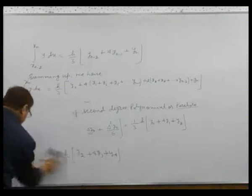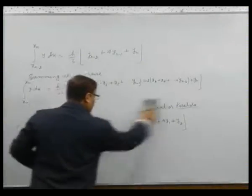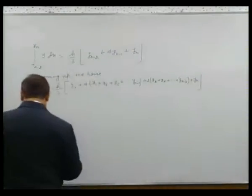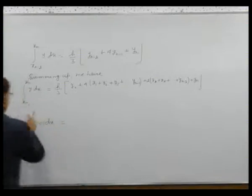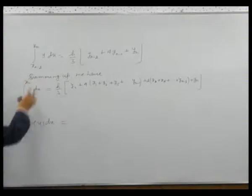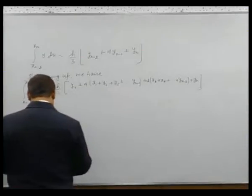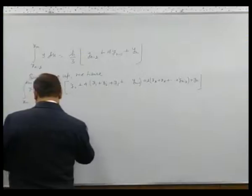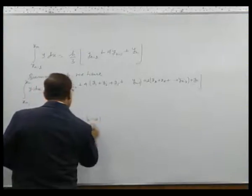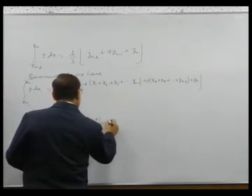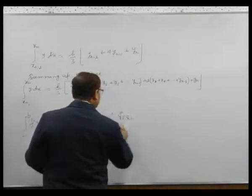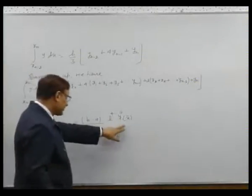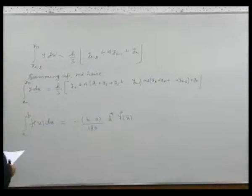If we want to calculate the error in Simpson's rule, writing the integral as from a to b of f(x) dx, the error becomes minus (b minus a) divided by 180, times h to the power 4, times the fourth derivative at x-bar, where x-bar is the point of maximum value of the fourth derivative in the interval a to b.